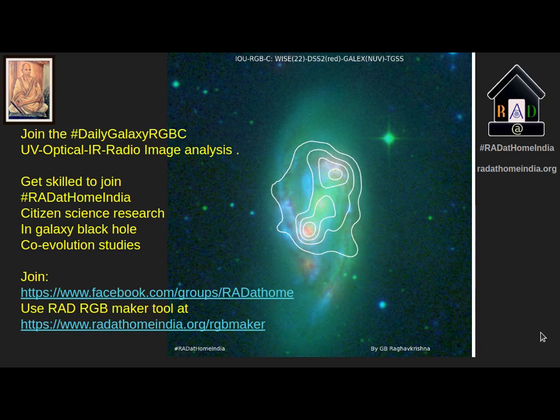Notice how the spiral arms are rich in dust. Dust, composed of micron-sized silicate grains, absorbs optical and UV light and gets heated up, then emits in infrared and is seen in the 22 micron image — shown in the red channel.